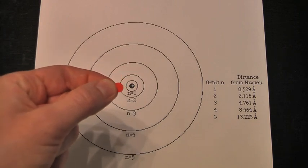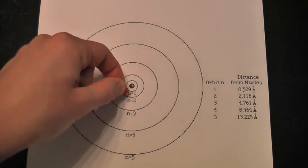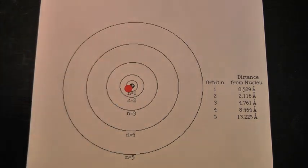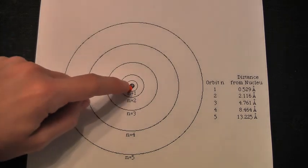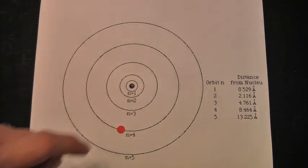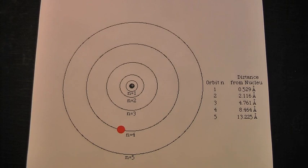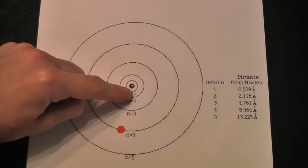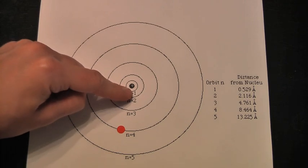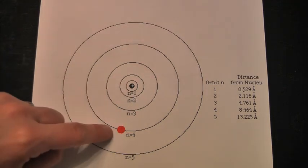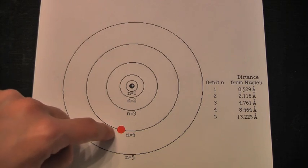This little red dot is going to represent our electron. If we have an electron revolving around the nucleus at the closest orbit, that electron has a lower energy compared to an electron that is orbiting the nucleus at an orbit further away from the nucleus. If an electron is close to the nucleus, it has a lower energy. If an electron is further away from the nucleus on a specific orbit, that has a higher energy.